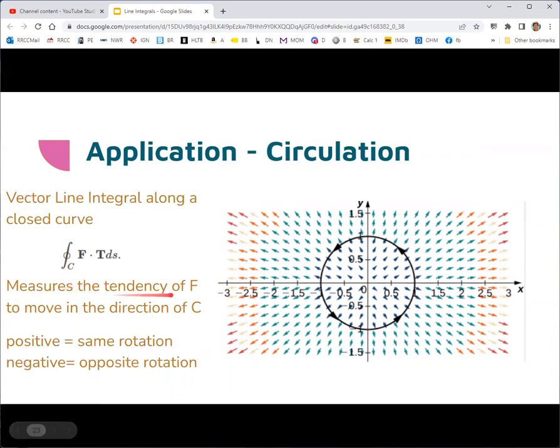What this is actually doing is measuring the tendency of the vector field to move in the same direction as the curve C. If you get a positive result, it means that it's the same rotation. If you get a negative result, it means it's the opposite rotation. And if you get zero, it means it's orthogonal.